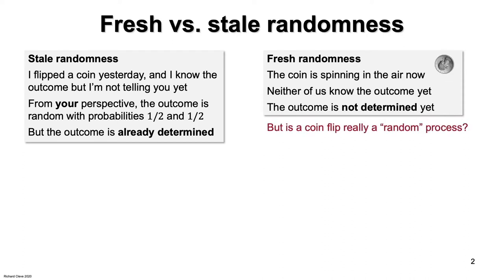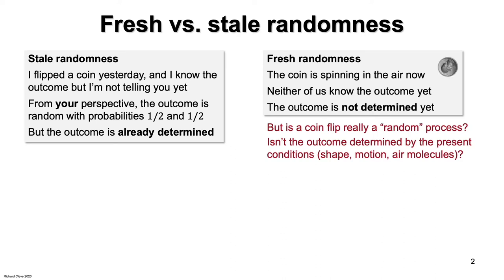But is a coin flip really a random process? Isn't the outcome determined by the present conditions? If we knew the exact shape of the coin, its exact motion, and the positions of all the air molecules,